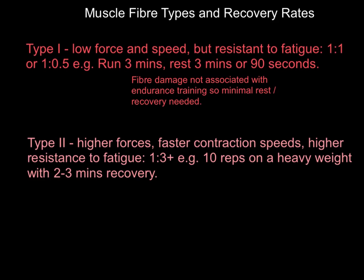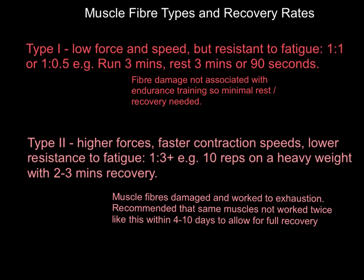For Type 2 fibers — both 2a and 2b — we can deal with them together in terms of recovery. They are characterized by high force levels, fast contraction speeds, and lower resistance to fatigue. As a result, they need longer recovery periods between sets or sprints. The work-to-rest ratio is 1:3 or more. For example, 10 reps on a heavy weight might take 10–20 seconds but require two to three minutes of recovery — at least three times the work period.